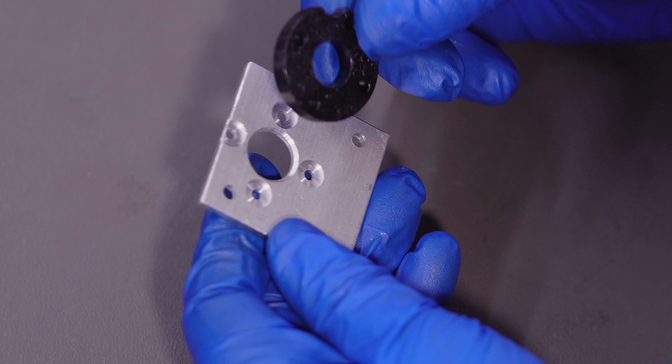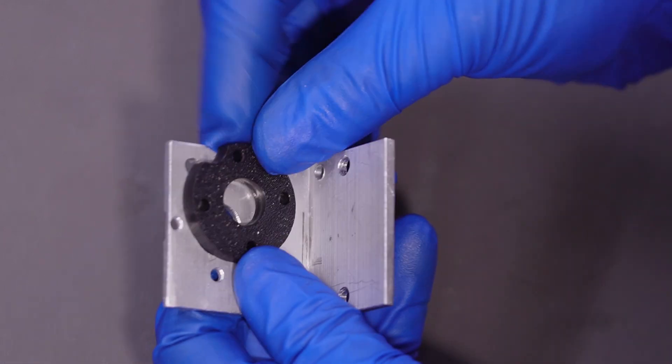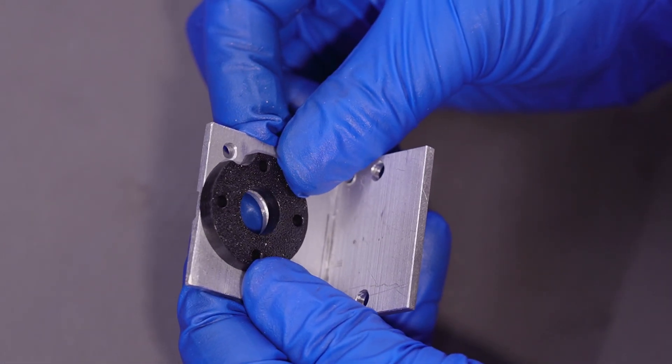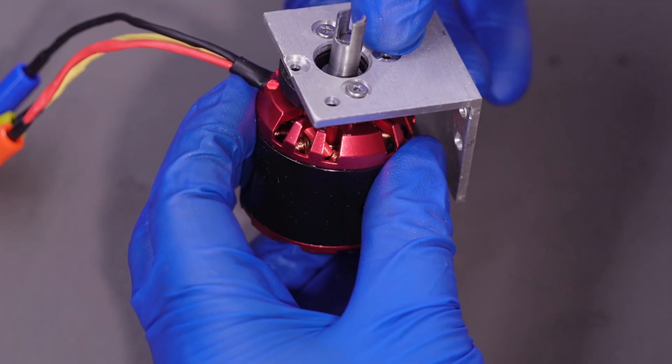Then, I'll install the motor onto the motor mount. The black piece is a 3D printed part, whose purpose I mentioned earlier.